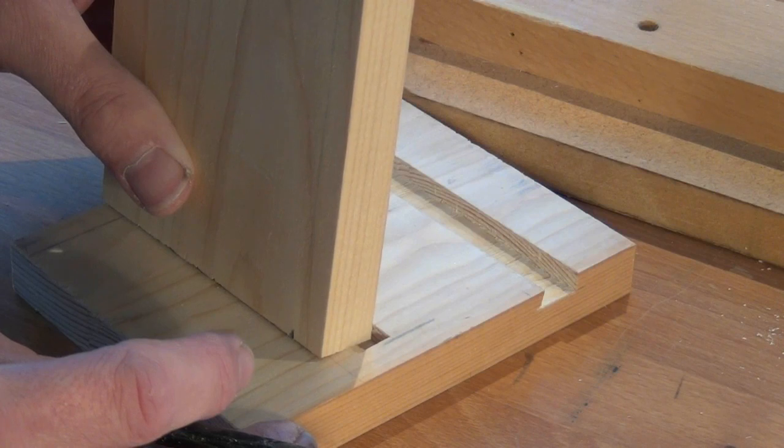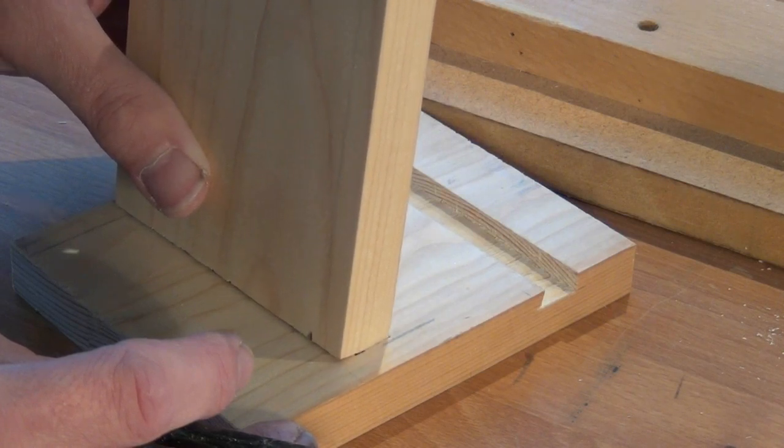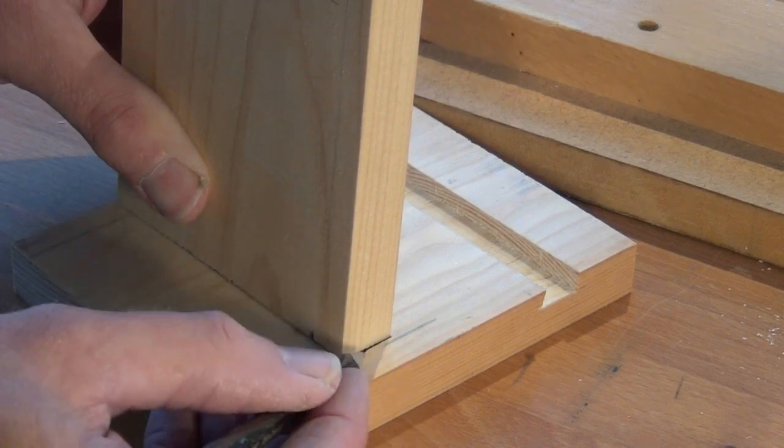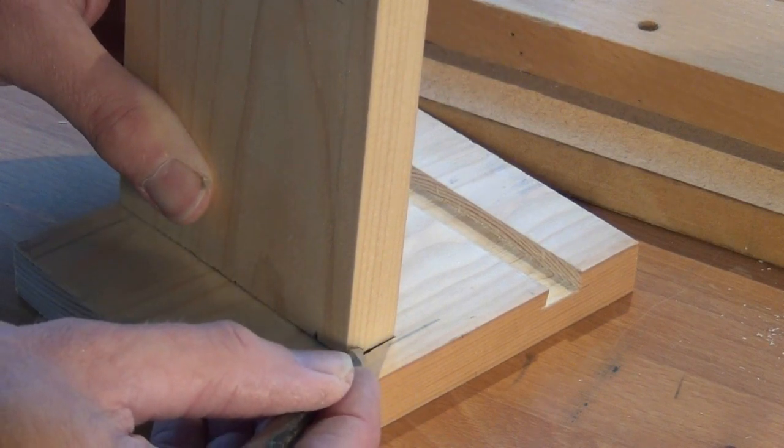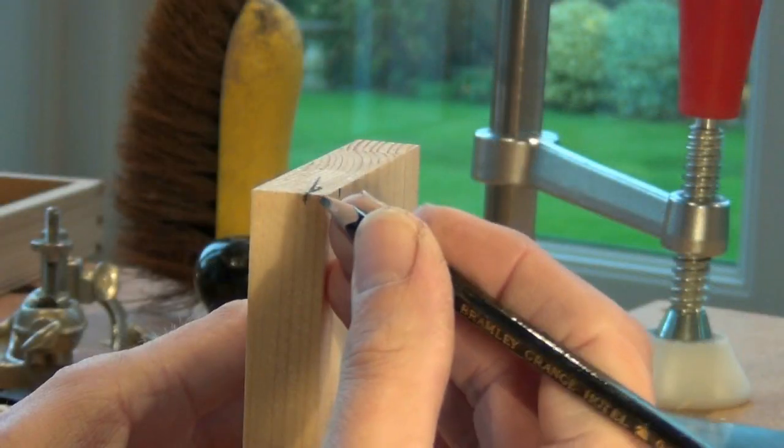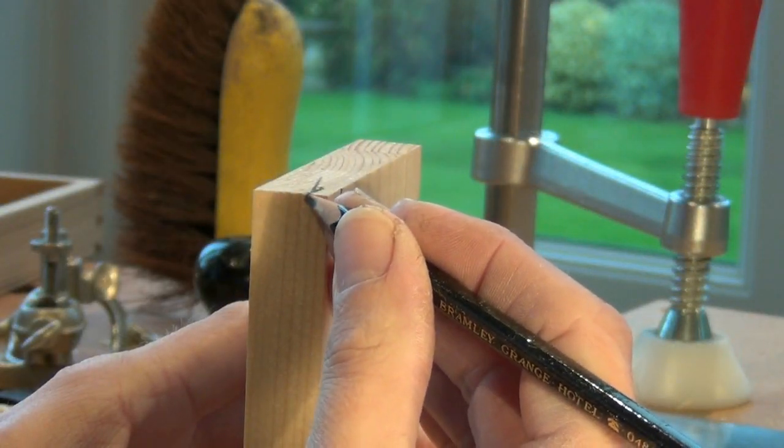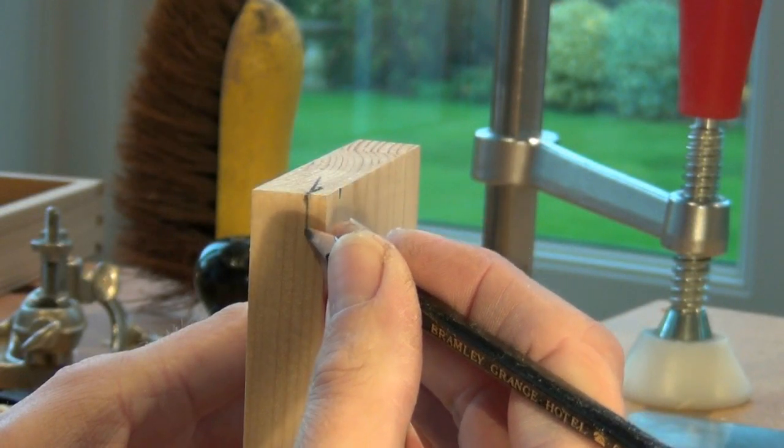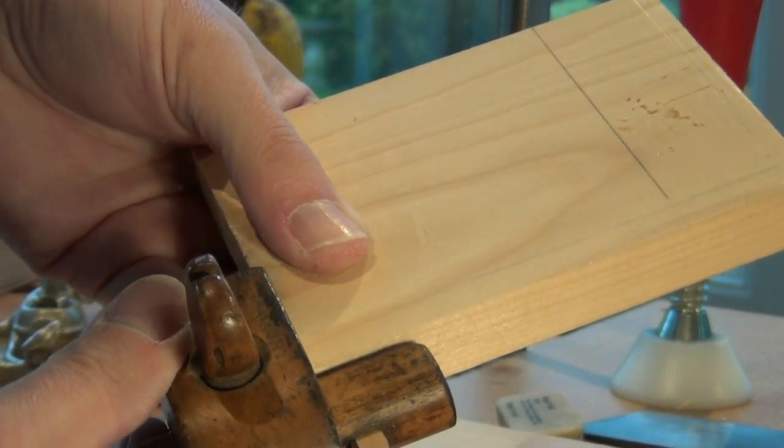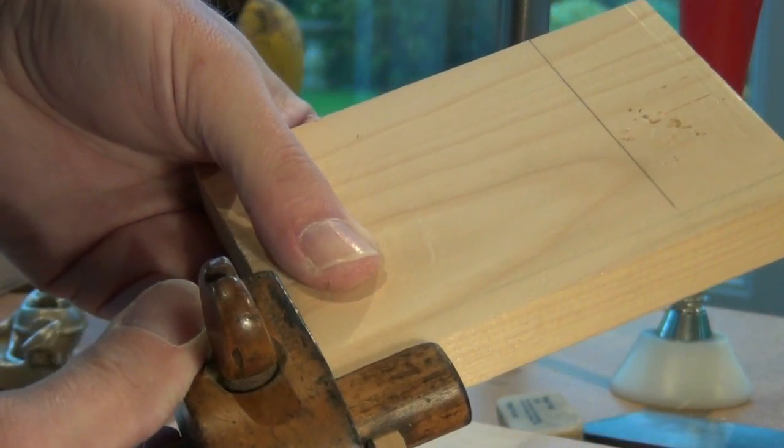To mark for the width of the dovetail just place it into the groove at the sharp end, make a little mark, continue that line down the front of the shelf a little way. Use a marking gauge to mark the depth that the dovetail section has to be.